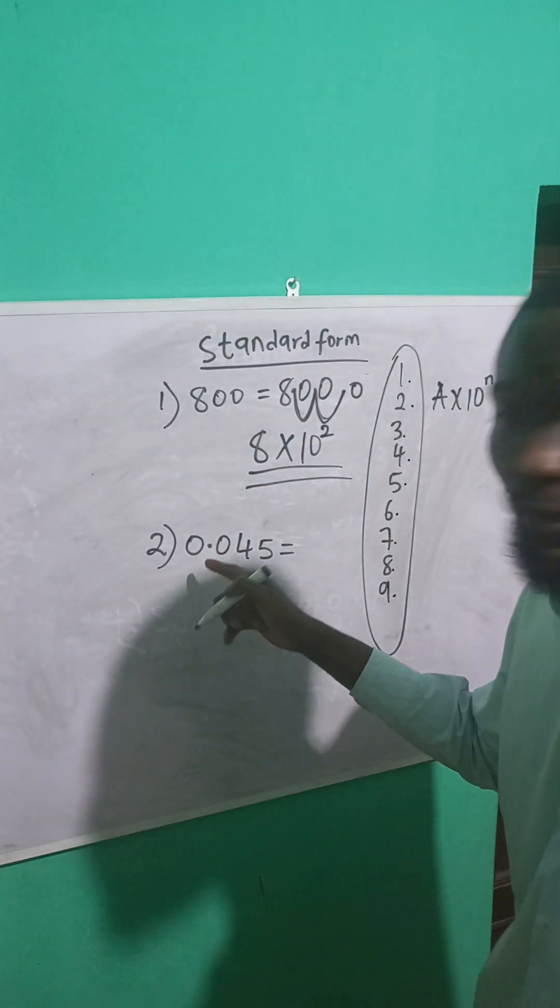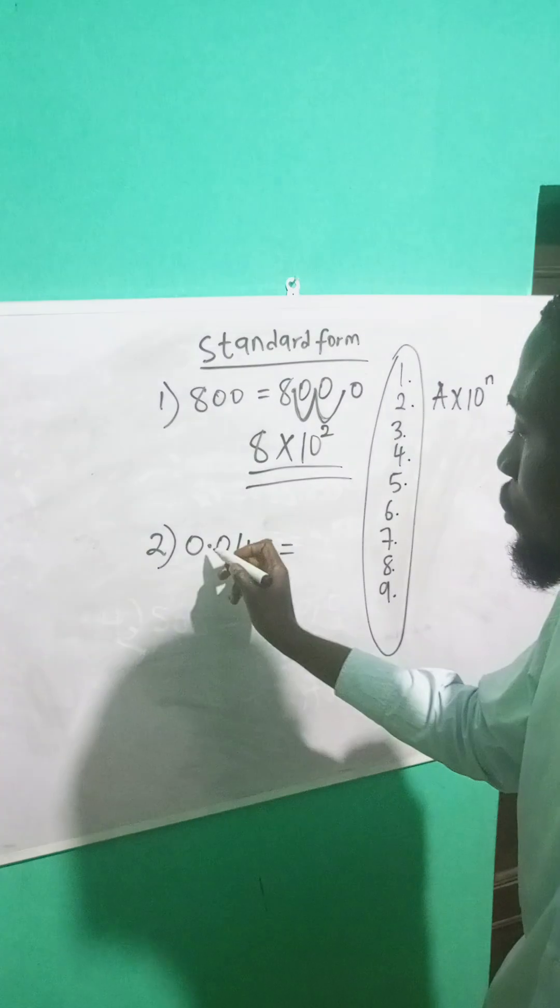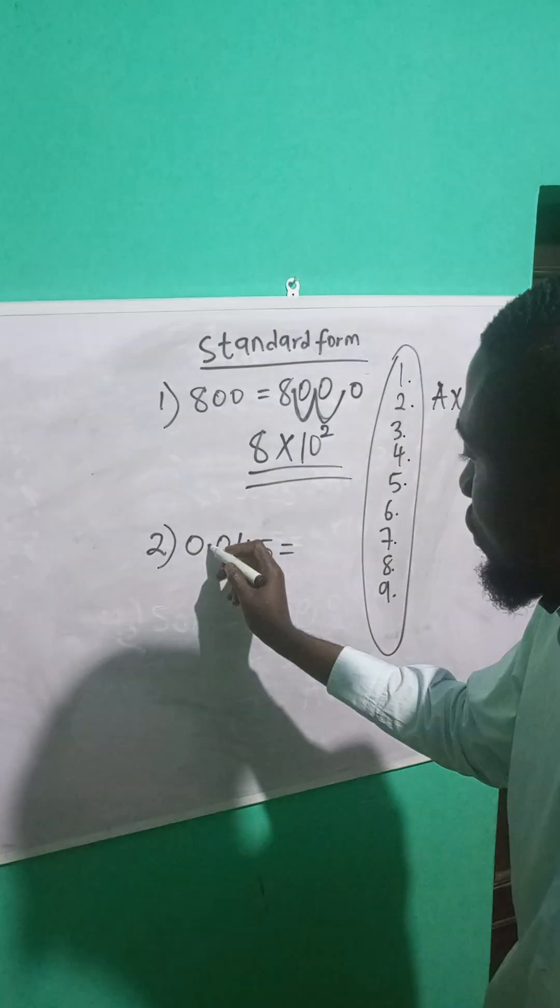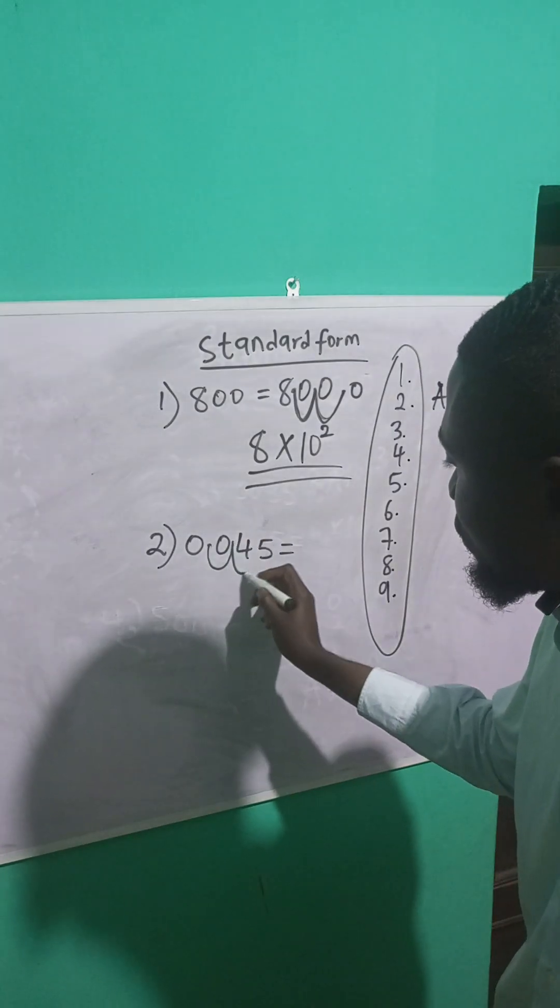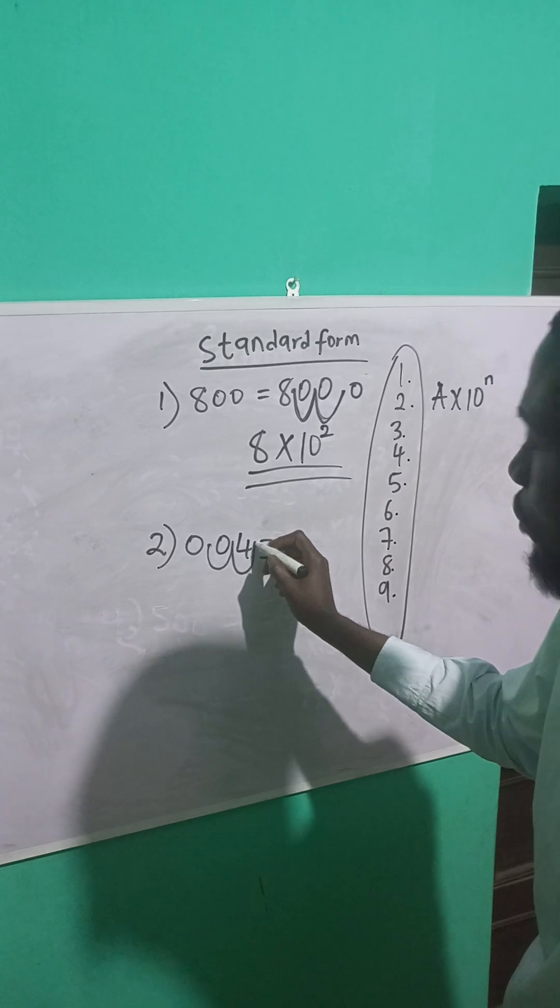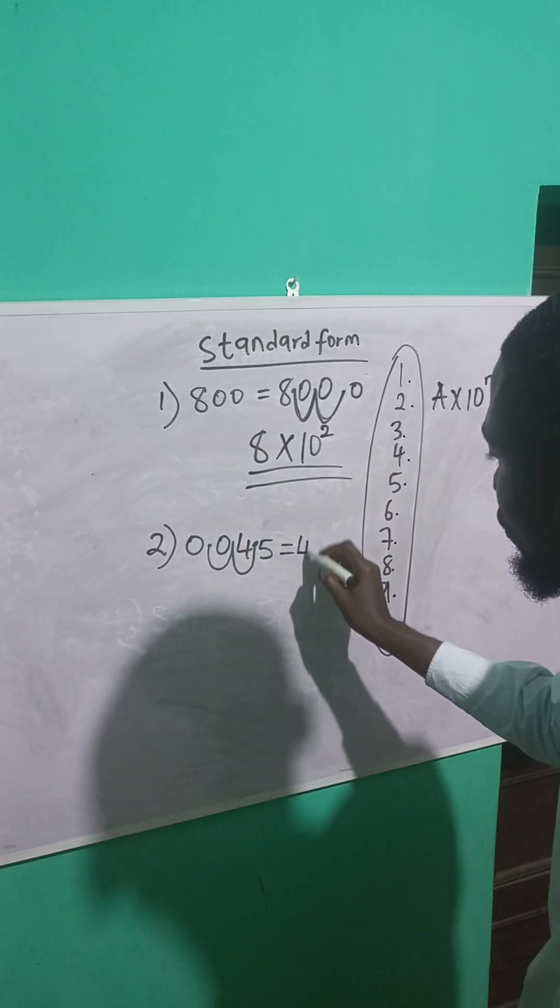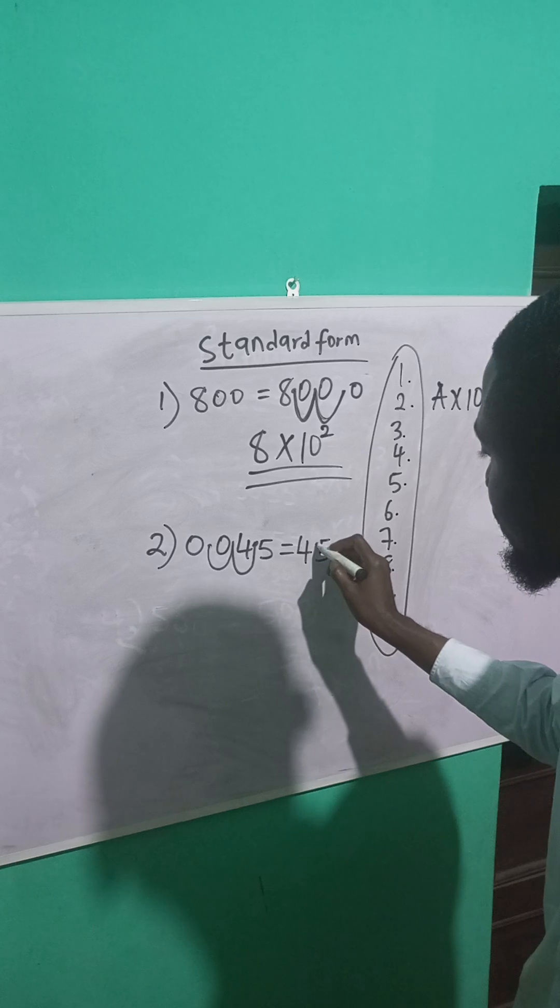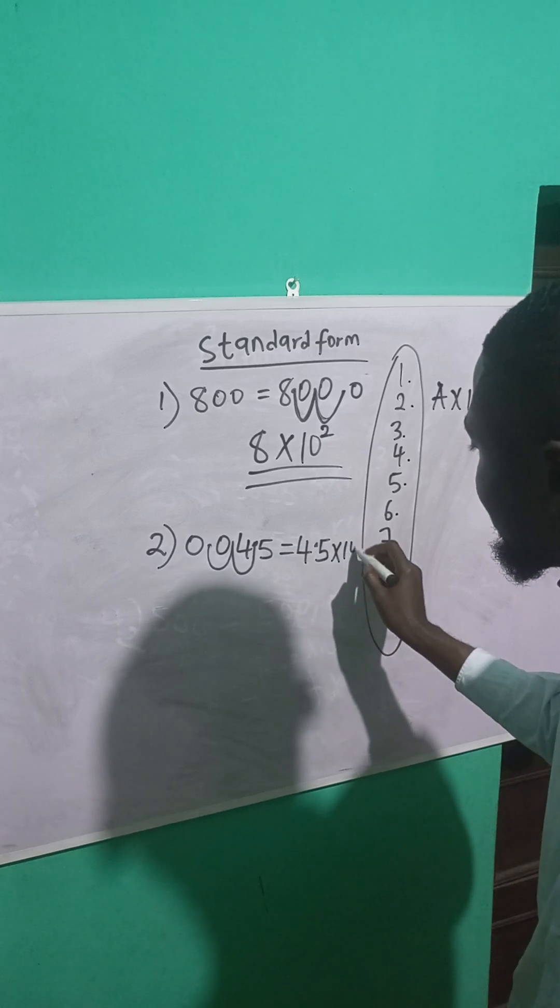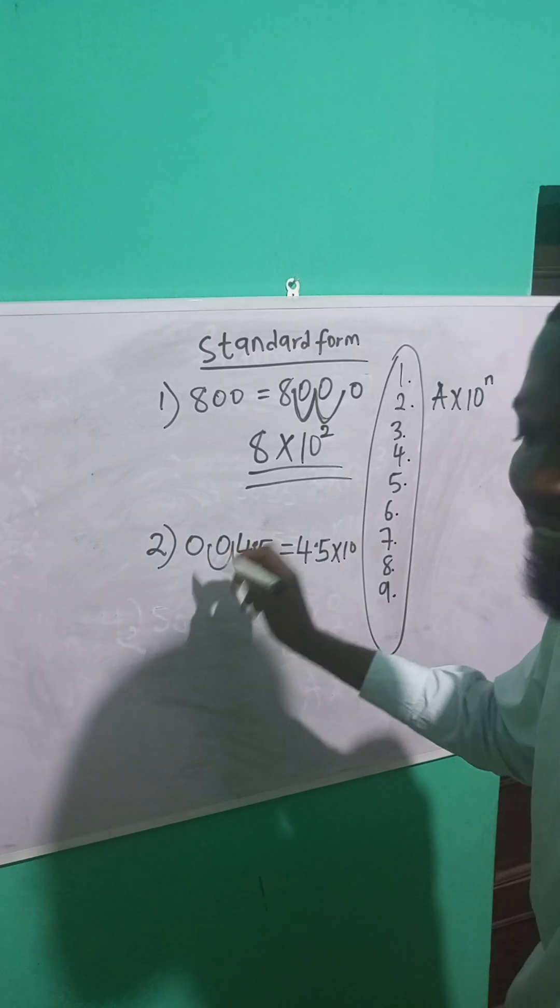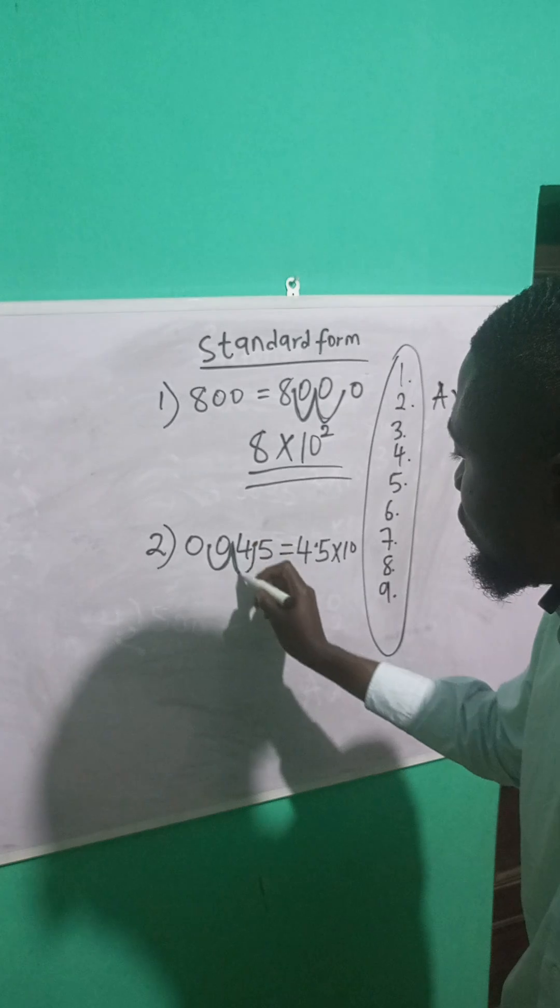Okay, let me just express this one in standard form. So what I'm going to do is I'll move from the decimal point one, two. Once I get to a whole number, I'll stop and put my point here. So this becomes 4.5 times 10 raised to power... how many times did I move here? One, two.